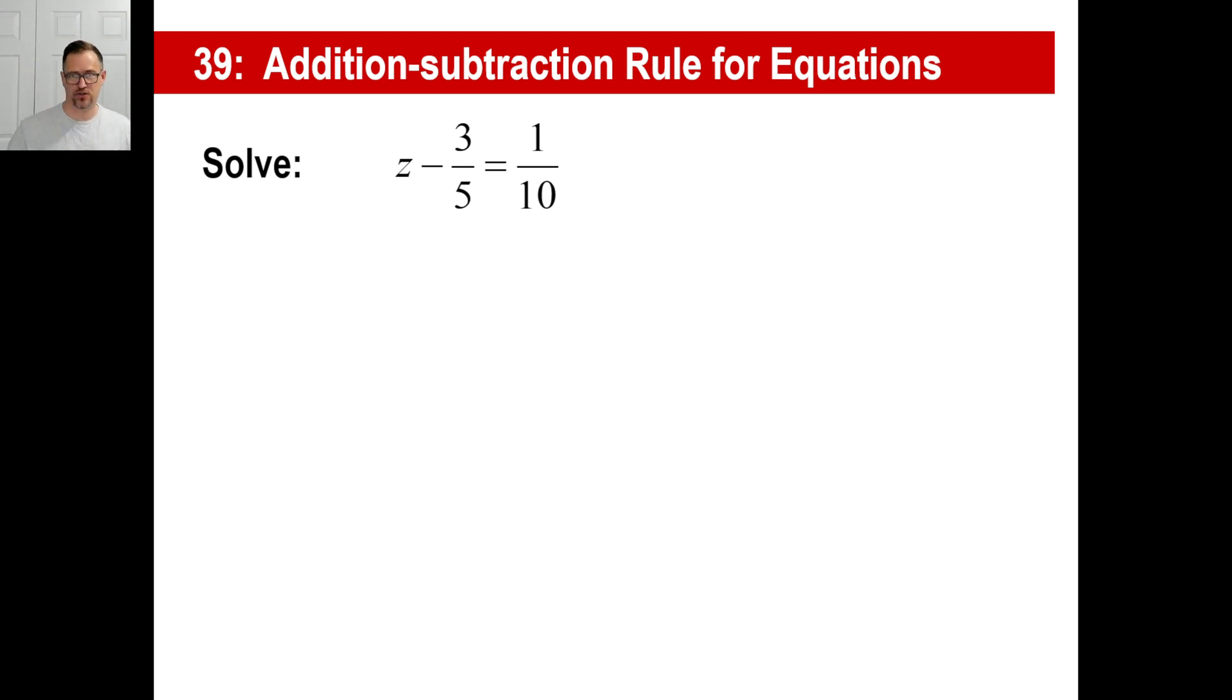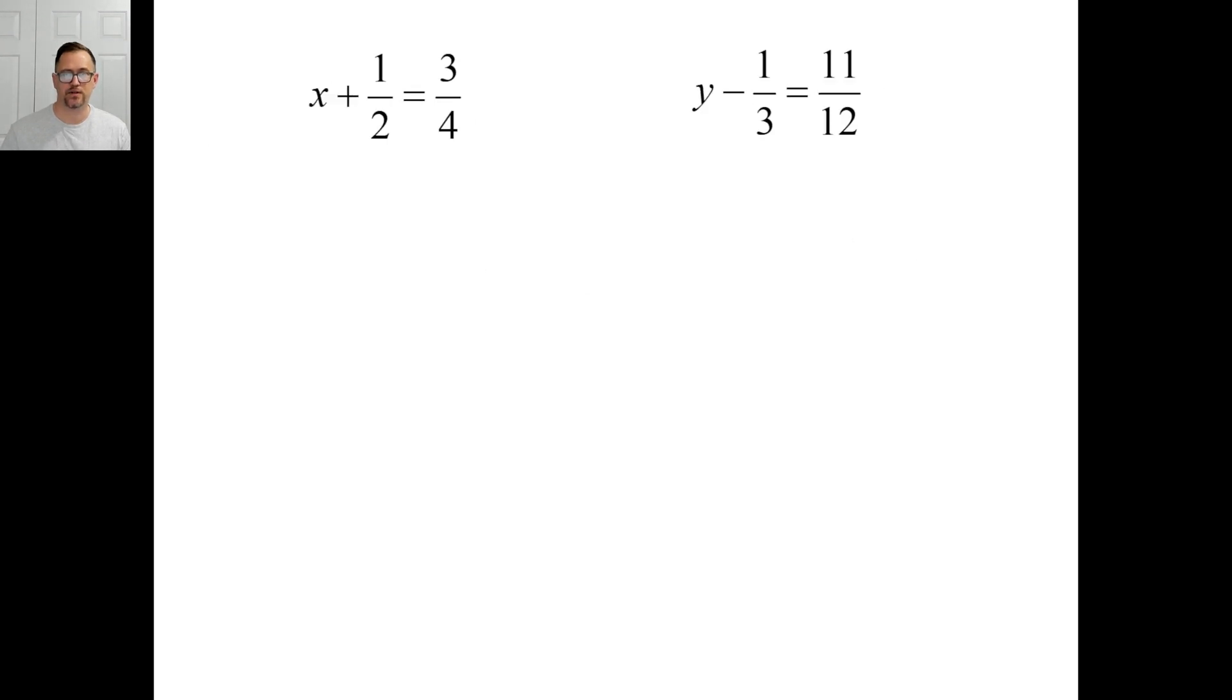Try this one. We have a, we've subtracted three-fifths from this side of the equation. We don't want that, we want nothing, so we're going to do the exact opposite, we're going to add three-fifths. And of course we're going to go to this side of the equation and add three-fifths as well. So this goes away, we just have our z there. It doesn't matter what letters you use. Now we have one-tenth plus three-fifths. Well, that's a piece of cake. One-tenth is one-tenth, three-fifths is six-tenths. So we have z is equal to seven-tenths and there we go.